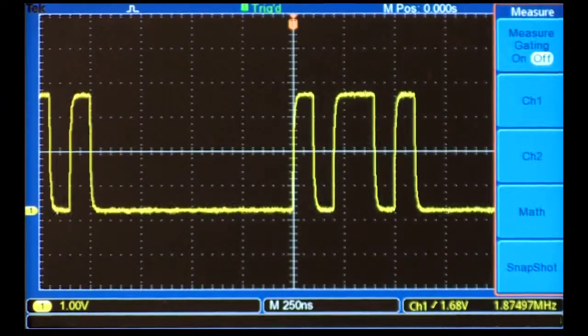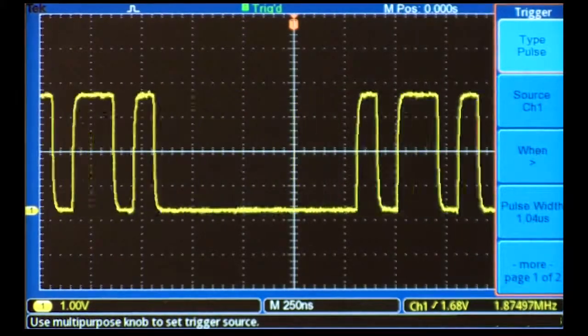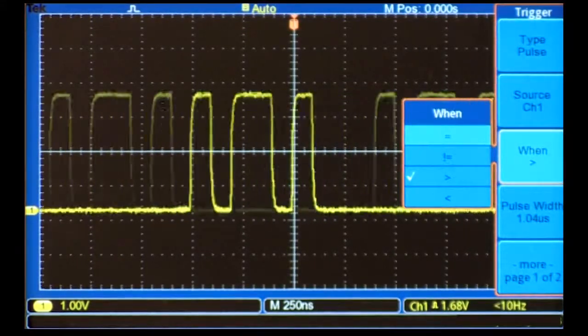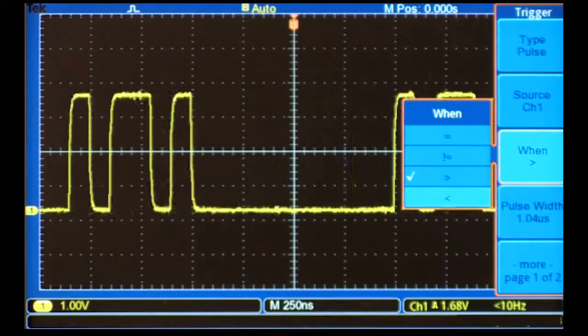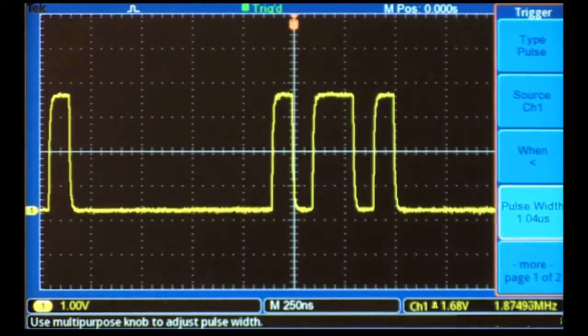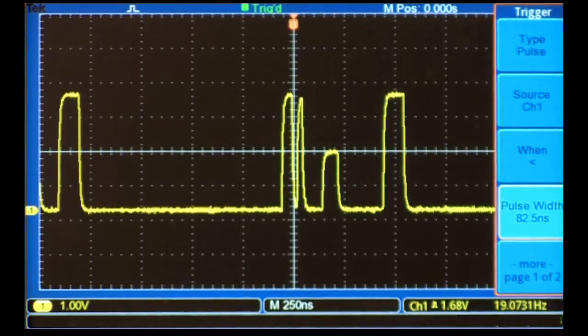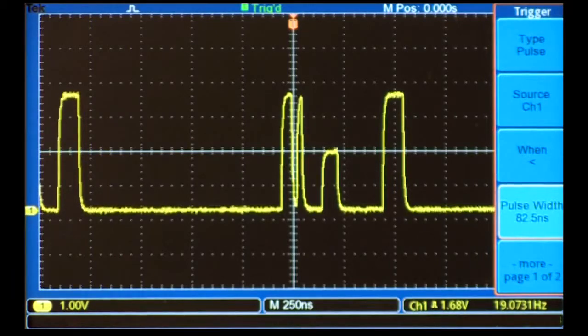But there's something lurking below the surface. It doesn't show up because it occurs so infrequently. We can set the scope to capture any positive pulse that's less than around 80 nanoseconds long. The scope captures a pulse with a glitch on the leading edge. Thanks to pulse width triggering, we can get a good look at the event.